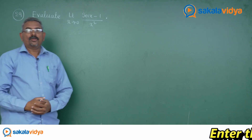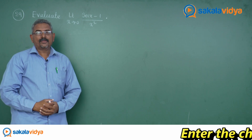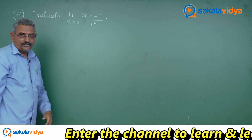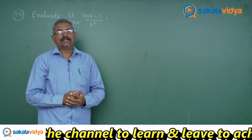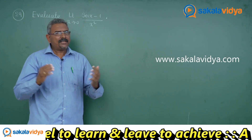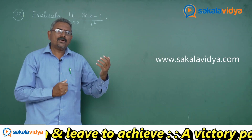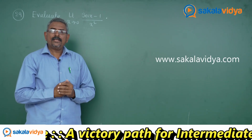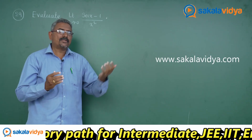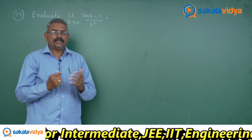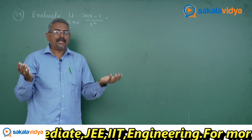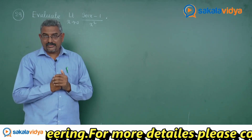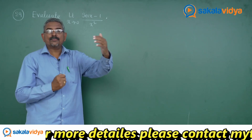Let us solve one more problem. Evaluate limit x tends to 0, sec x minus 1 by x square. Let us think: is there any formula for sec x minus 1 in terms of sin x or cos x? There may not be any formula, so here we need to change the sec x in terms of cos x.